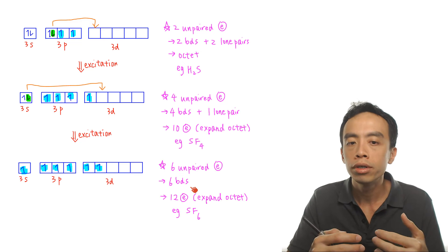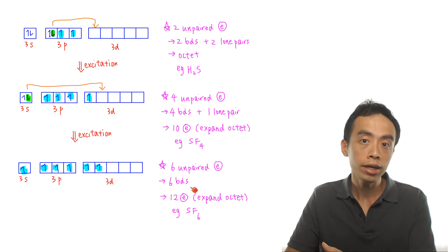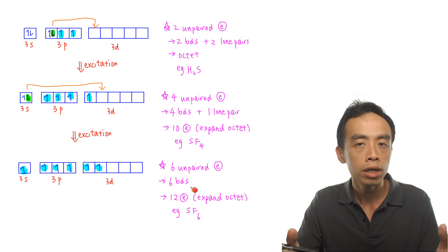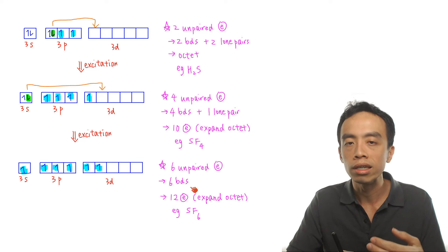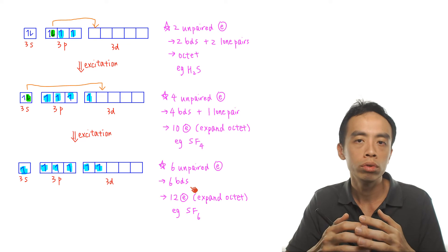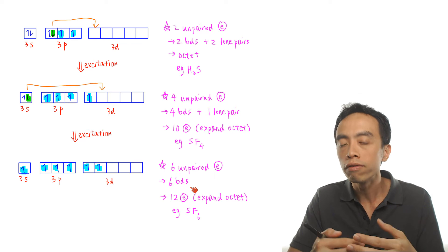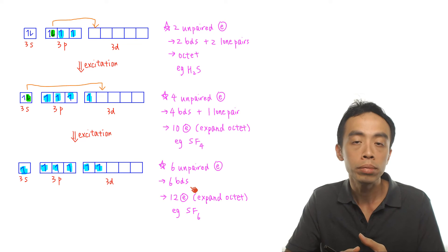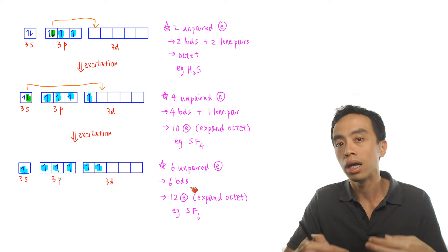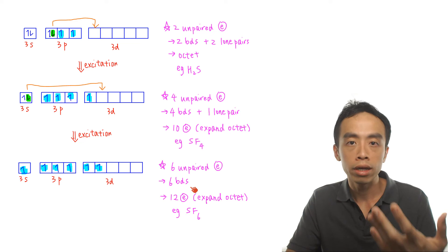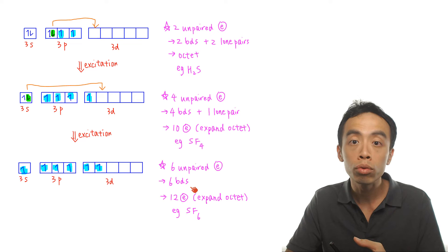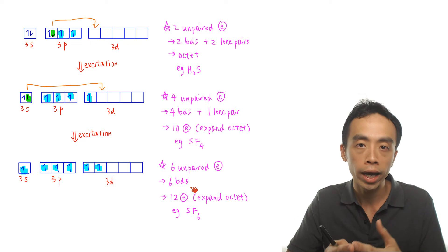The more important idea is to appreciate why sulfur would want to expand octet. Does it prefer octet, or expansion of octet? Sulfur prefers expansion of octet because forming more bonds makes the overall outcome more stable. This is particularly important as we transition from octet rule to expansion of octet: elements in period 3 and beyond have the capacity to unpair electrons, form more covalent bonds, and become more stable, so they will gladly expand octet if they have the opportunity. Remember — expansion of octet is the norm; only period 2 elements (carbon, nitrogen, oxygen, fluorine) cannot expand octet.